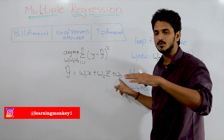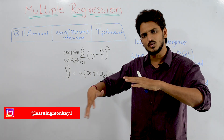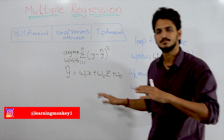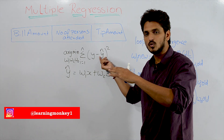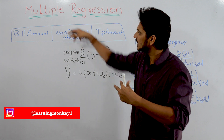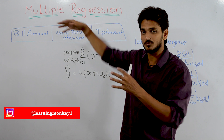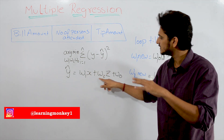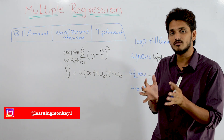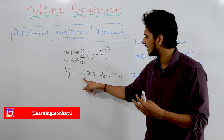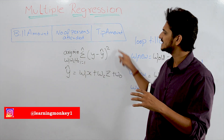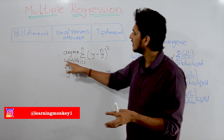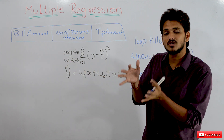The equation of the plane is: ŷ = w1·x + w2·z + w0. We use this plane to predict the tip amount because we have a three-dimensional coordinate space. We need to identify w1, w2, and w0 such that we have minimum loss — that is the meaning of this optimization function.